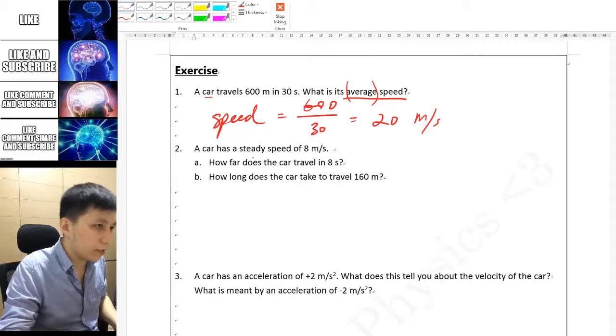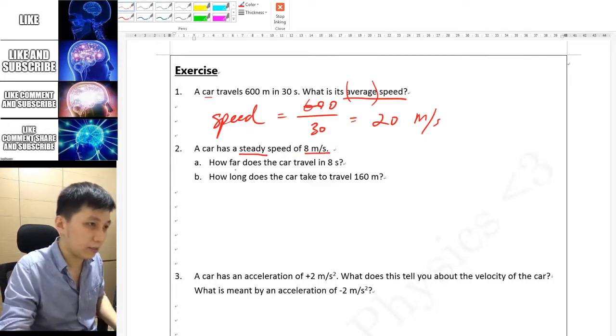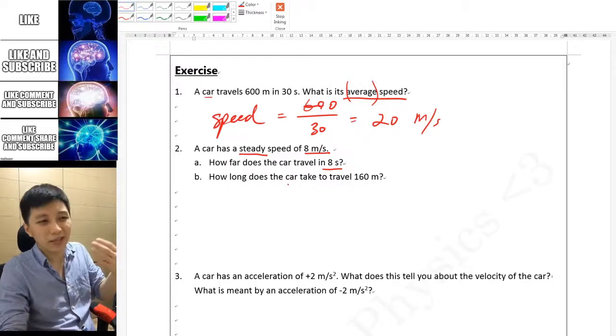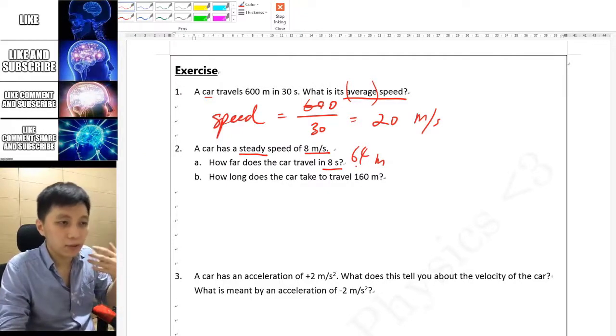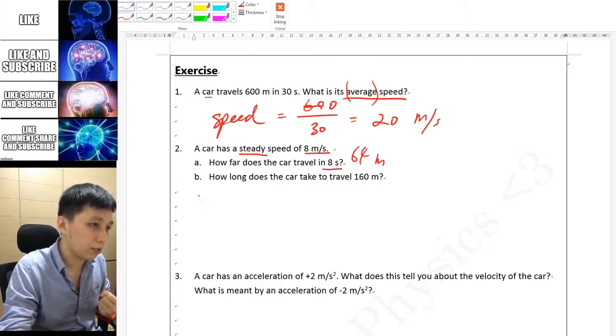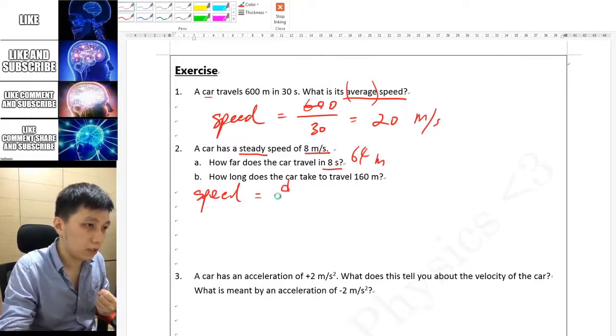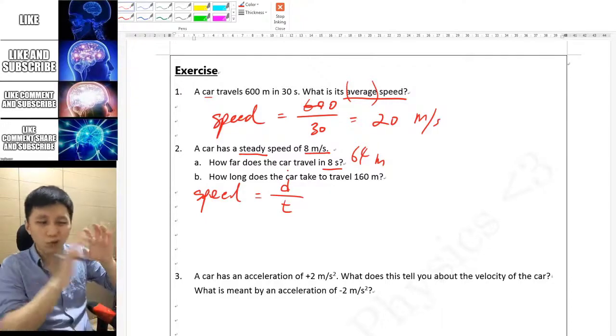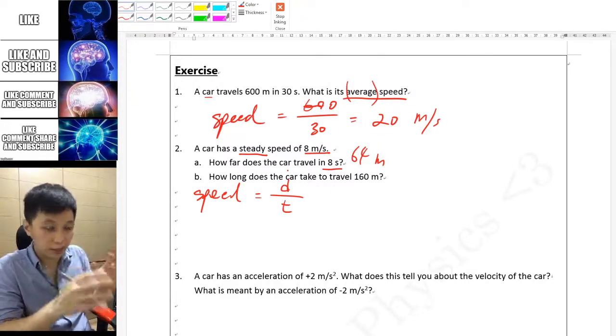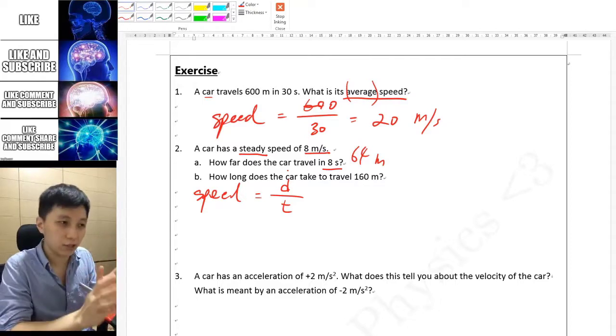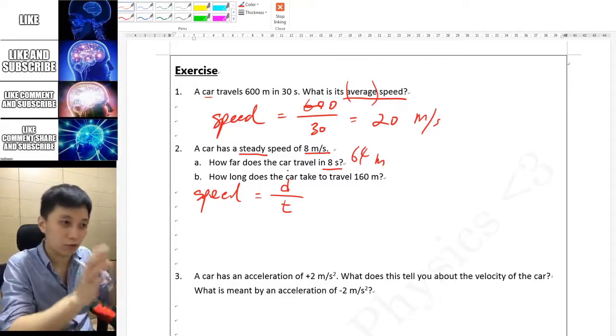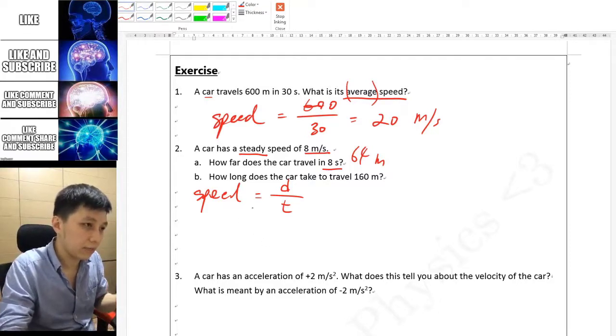A few moments later, for the next question it asks the car has a steady, that means a constant speed of 8 meters per second, how far it traveled. You may simply say x times 8 equals 64, which of course is correct, but I would suggest you to put down the equation still. How I will do is speed equals distance over time. You don't have to rearrange the form. Trust me, this is something that in the long run would help you. Just remember the formula in a certain form. Don't try to rearrange it because you may make careless mistakes.